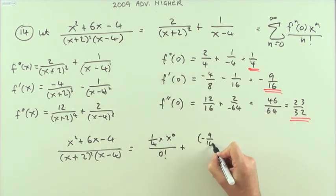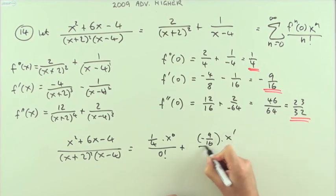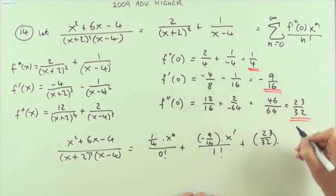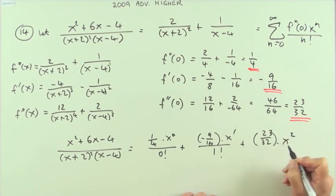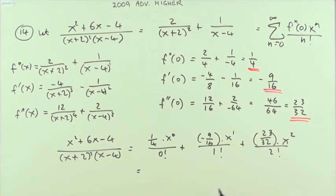Plus 23/32 × x² over 2!. Now it's just a case to tidy it up. Well, x⁰ is just 1, so that first term is just 1/4. 1! is just 1, and that's x, so that's just -9/16 x. Plus, then for this one, now 2! is just 2 times 1 is 2, so that's going to double that denominator.